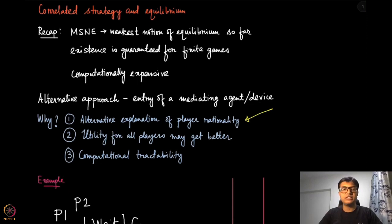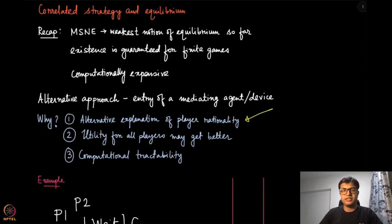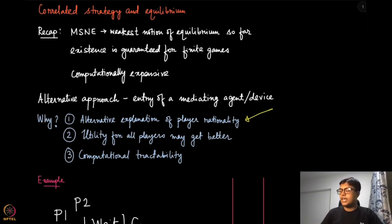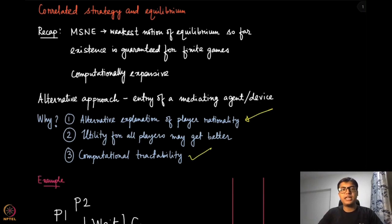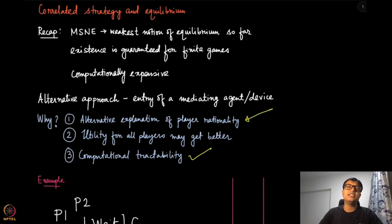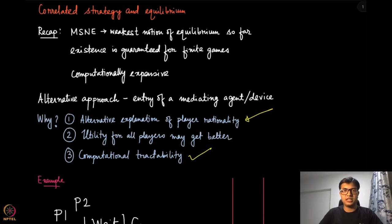The first reason is this alternative explanation of rationality. We will also see that the utility of these players can improve when they coordinate and delegate to a randomization device. Finally, there is an advantage in computational tractability — mixed strategy Nash equilibrium is computationally very expensive to find, while correlated equilibrium is relatively easier to compute.